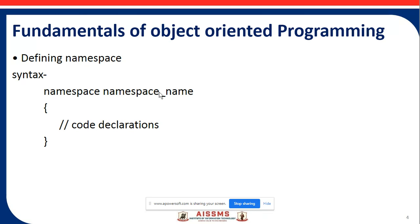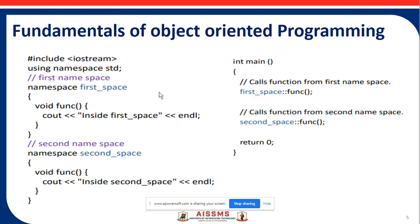Now we look at the syntax format for namespaces. The syntax is: the keyword 'namespace', followed by an underscore and the name, then an opening curly bracket containing the code declarations, and a closing curly bracket.